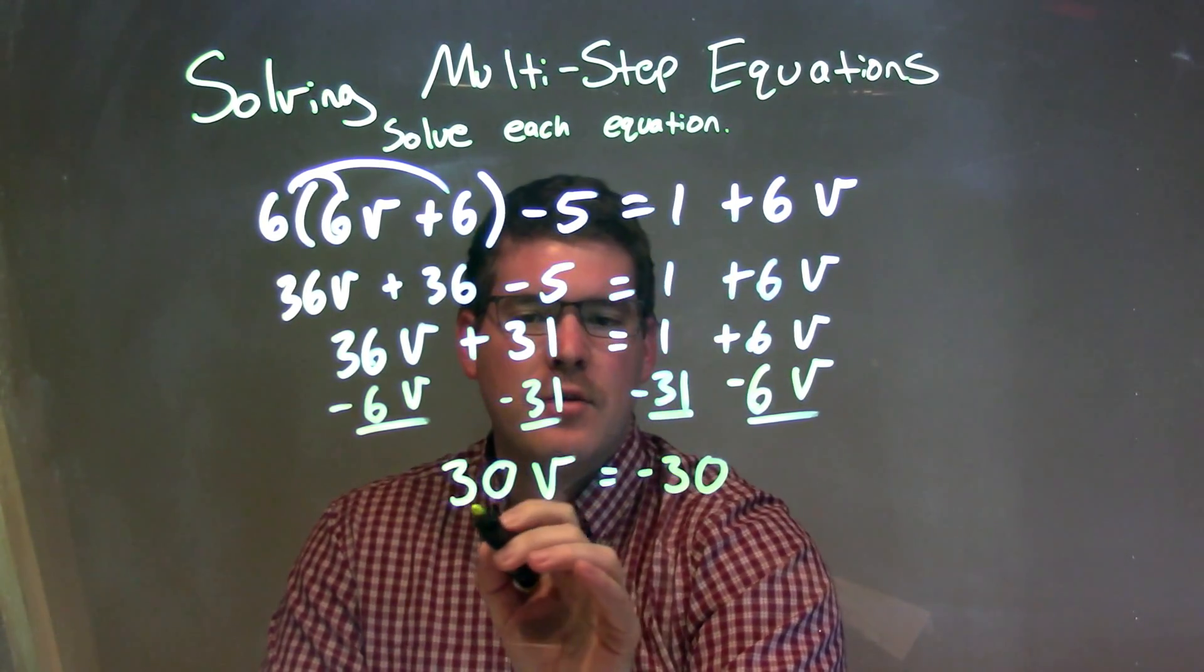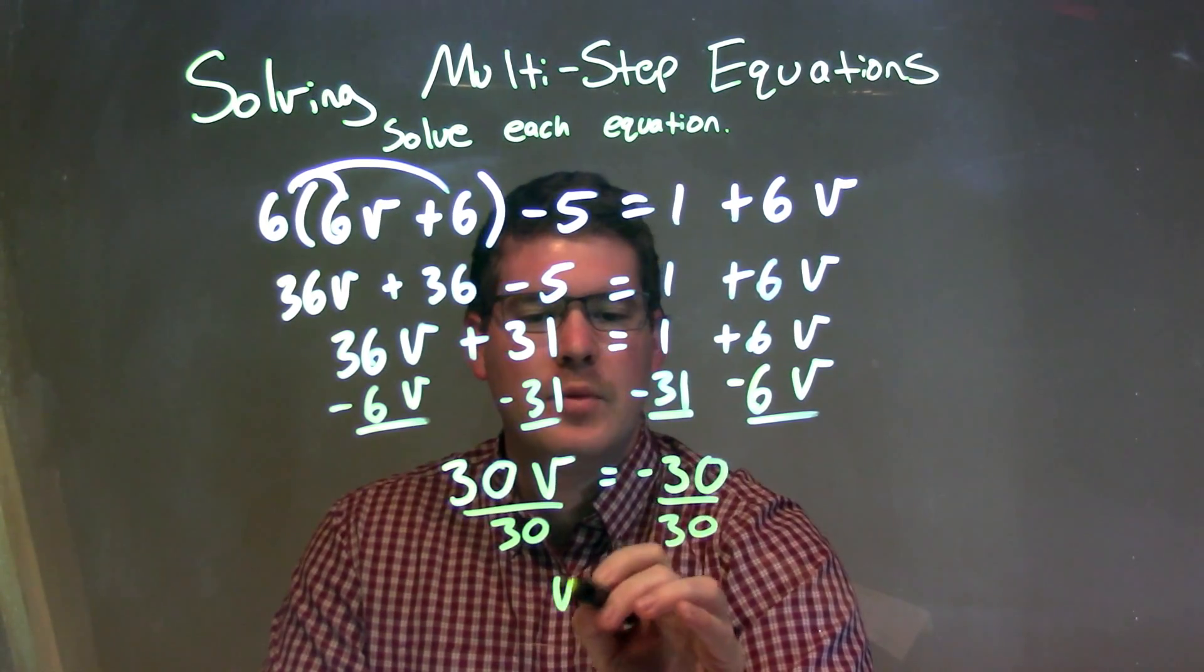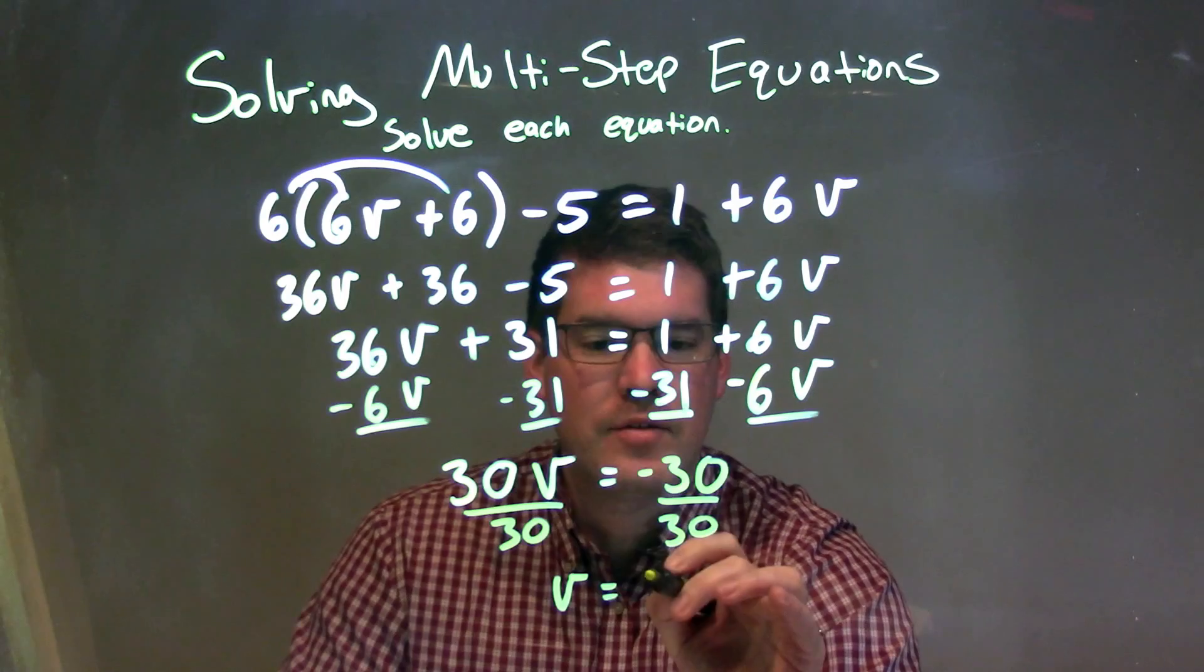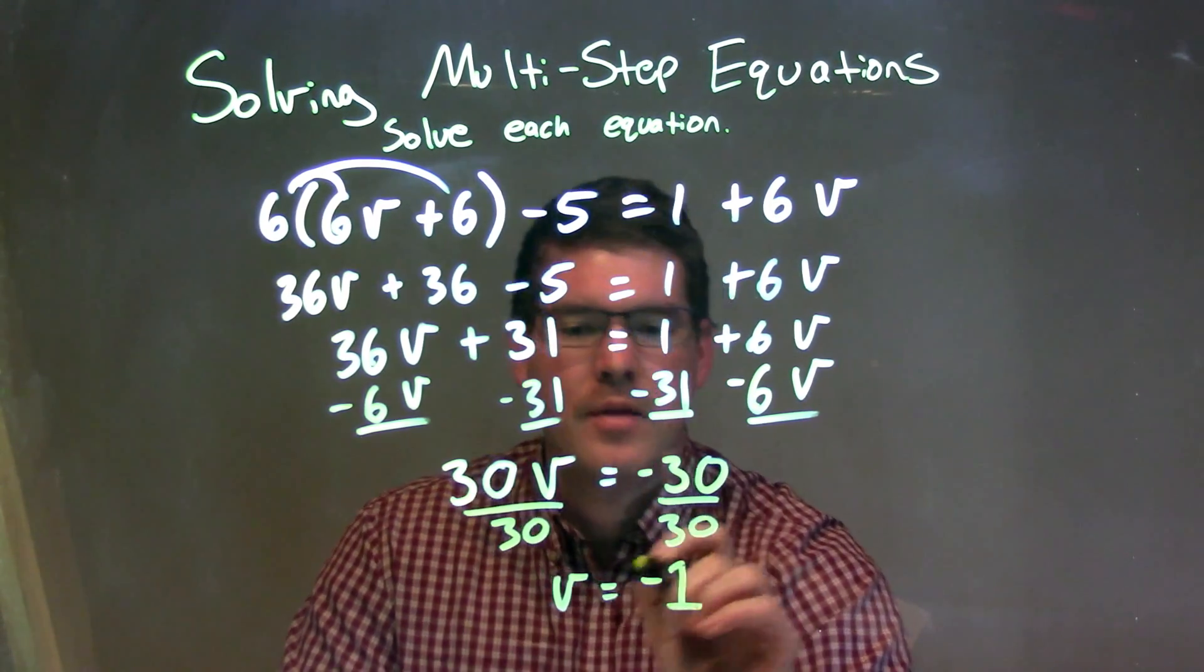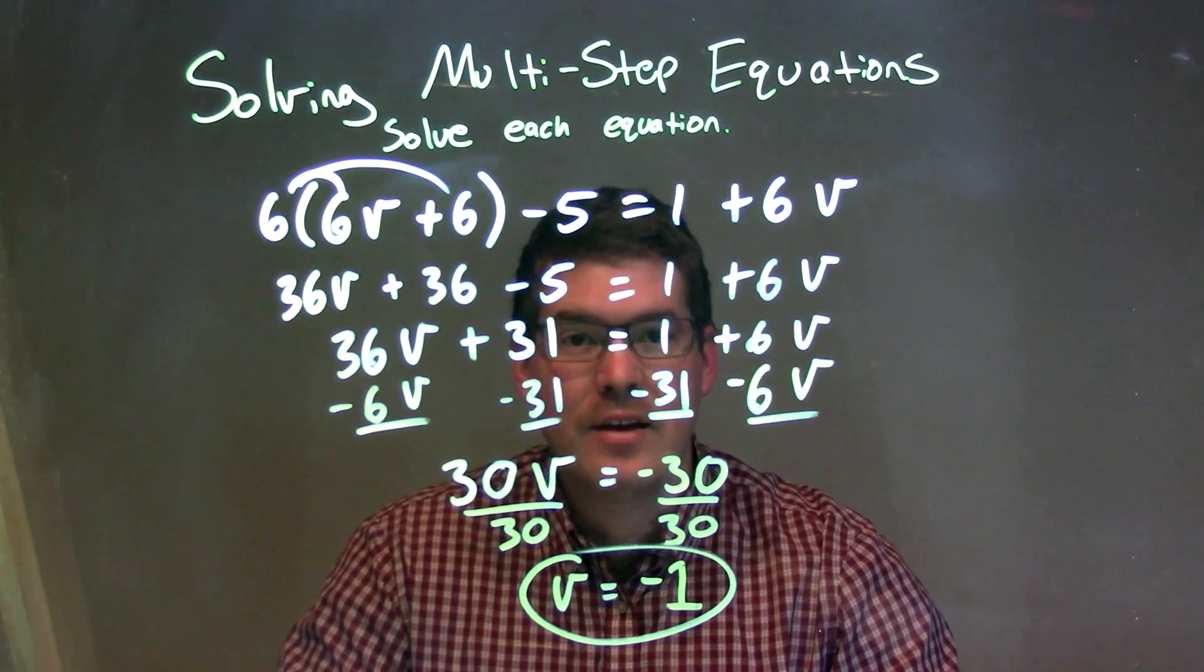I have to get V by itself still, so I divide by 30 to both sides. That leaves me with V here by itself. Negative 30 divided by 30 is a negative 1. And there we have it. Our final answer here is V equals a negative 1.